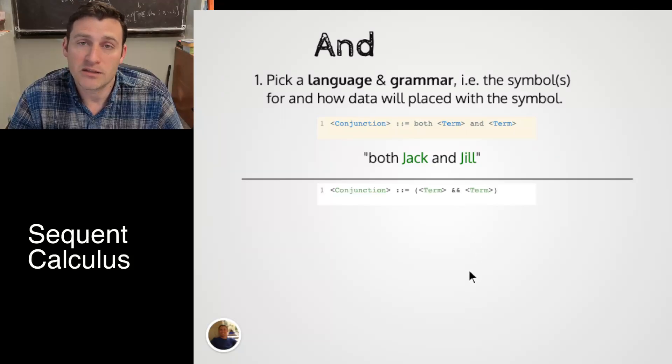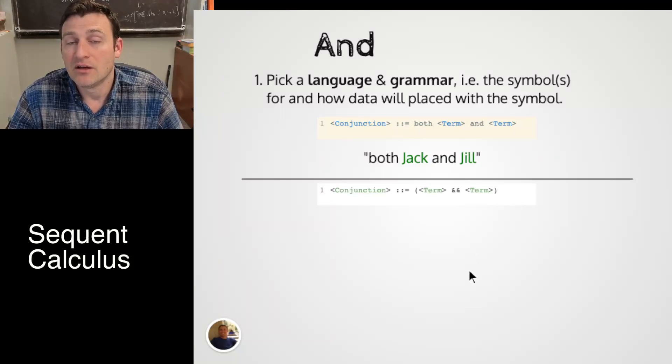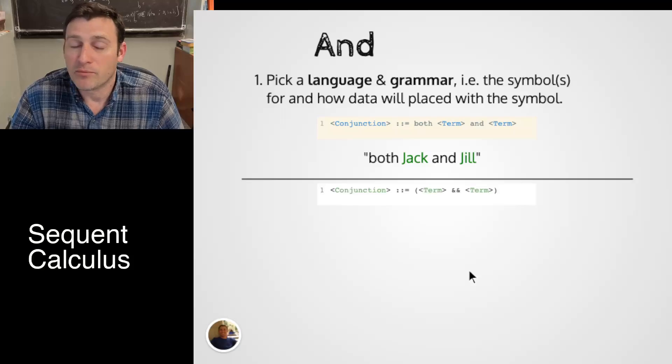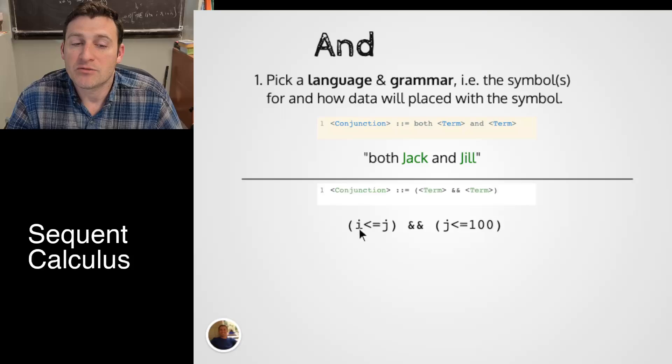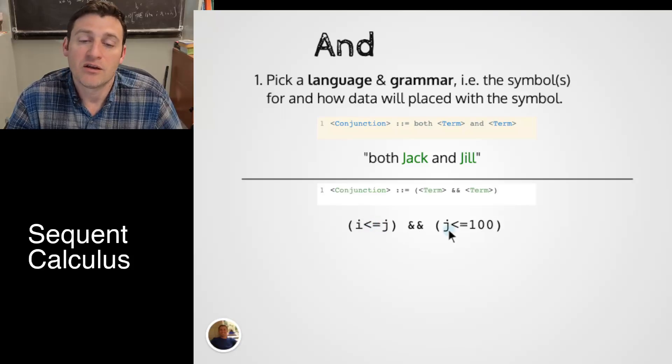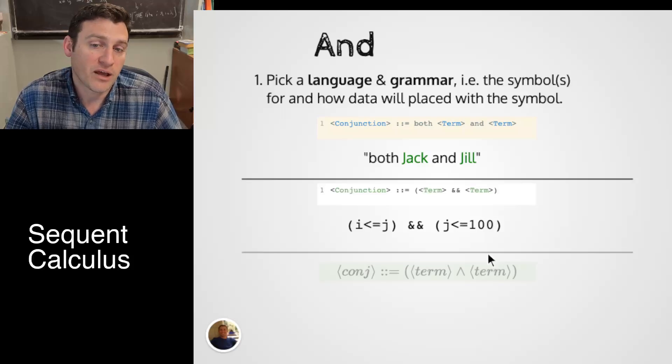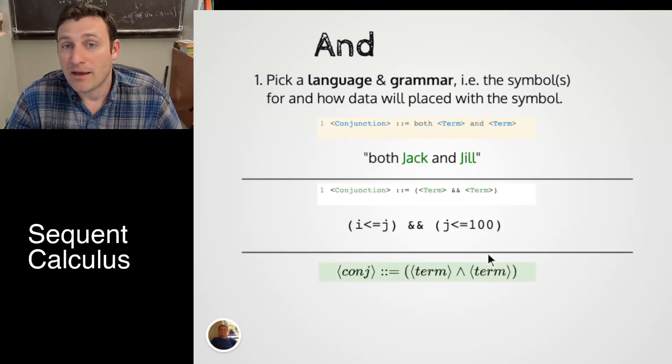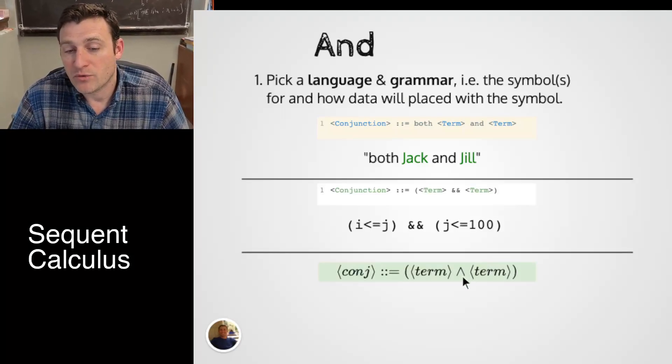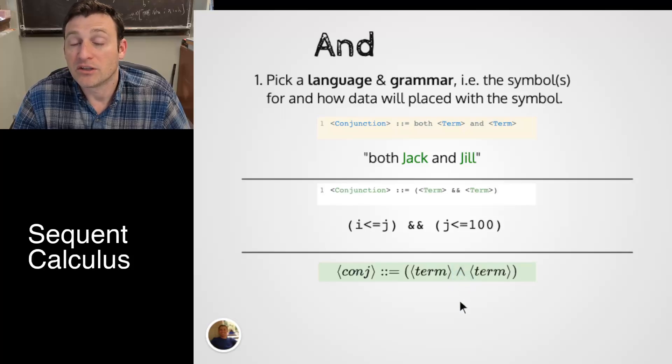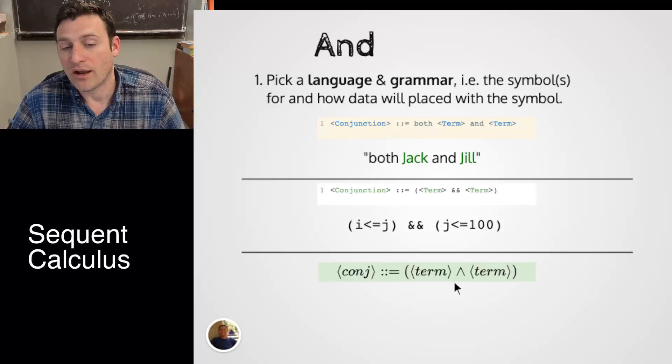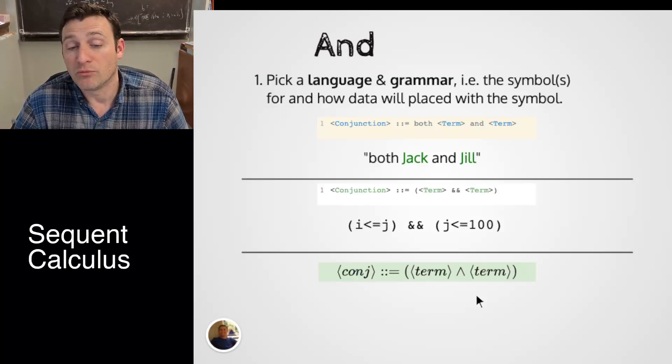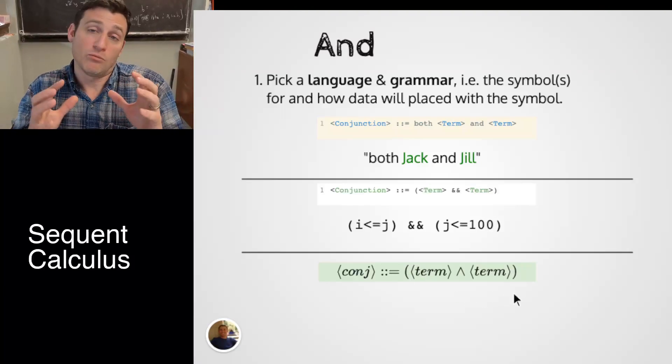You could also replace this into a programming language like this. We could say i is less than or equal to j and and, which just reads as and, j is less than or equal to 100. It'd be a standard line of text. In mathematics, we use this notation with the upside down V. It's called conjunction sometimes. So you'll also see the word conj or conjunction associated with the letter and.